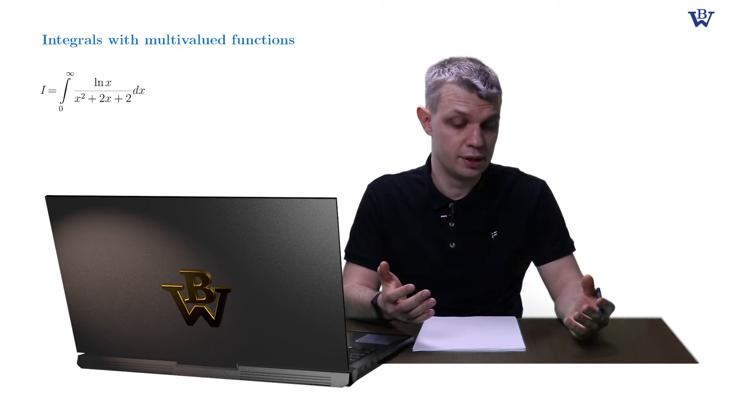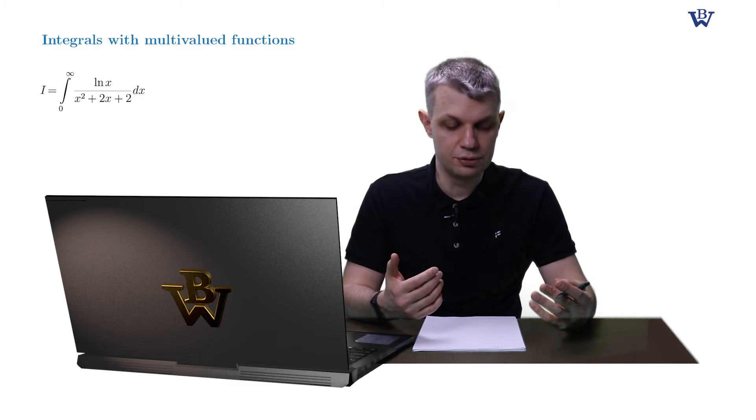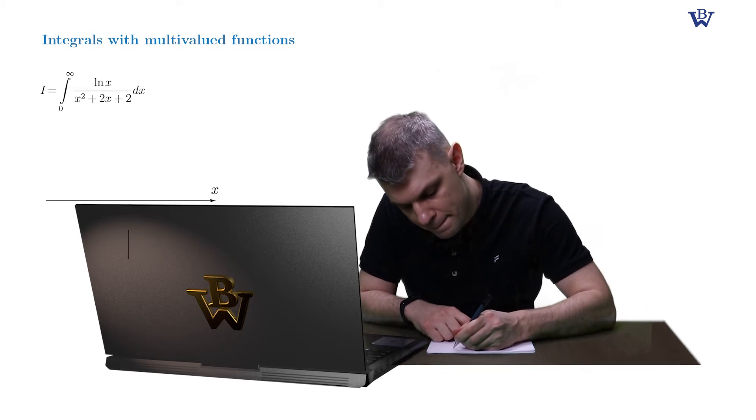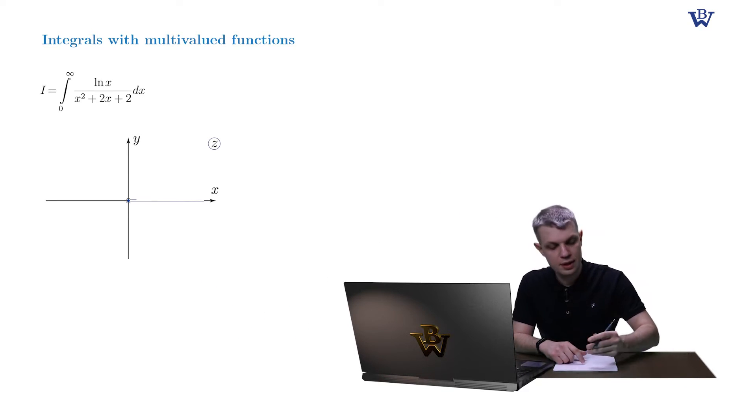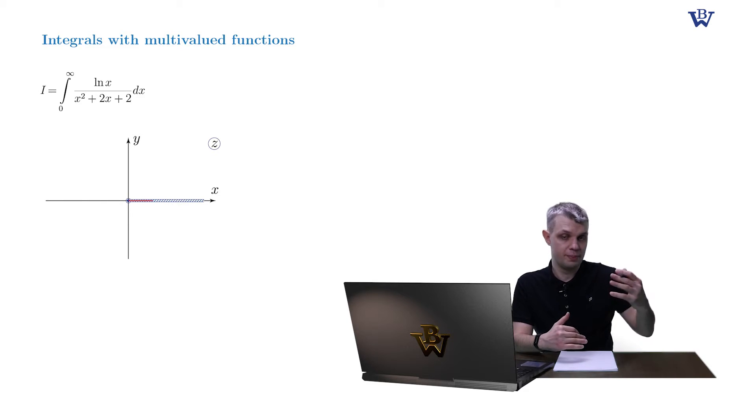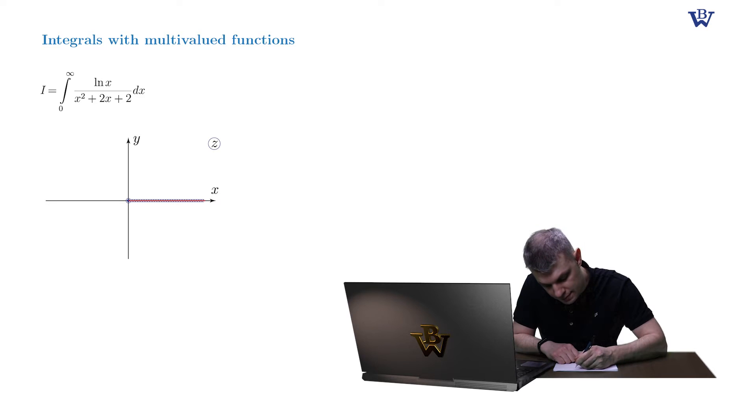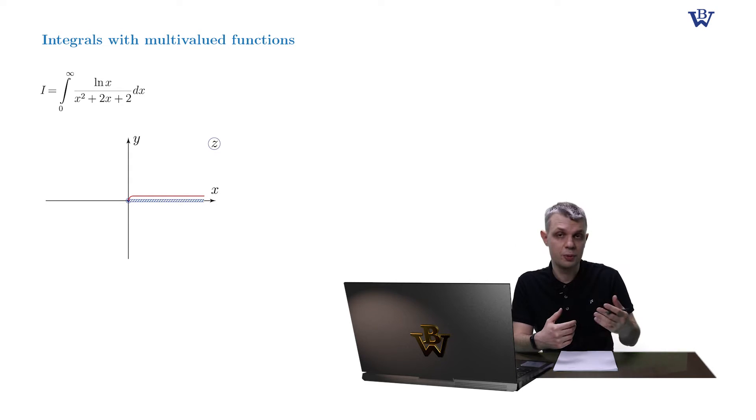The first step is the obvious one. We need to draw a branch cut which coincides with our contour. Then we need to pull the contour slightly upward so it runs along the upper bank of the branch cut. And equate our original integral with this new contour one, effectively fixating the regular branch of our multivalued log function.